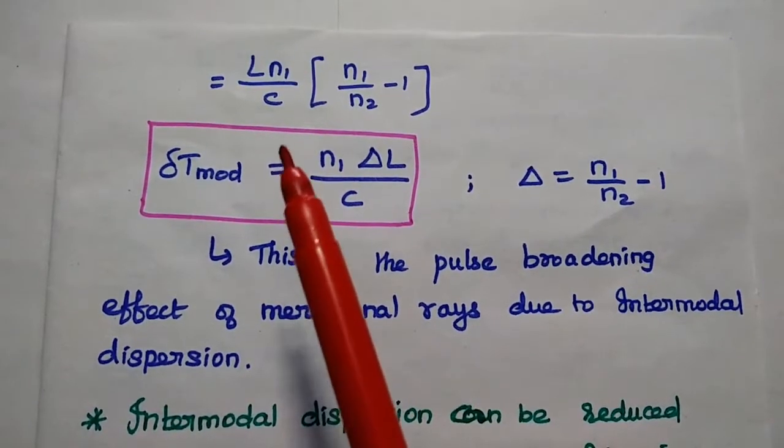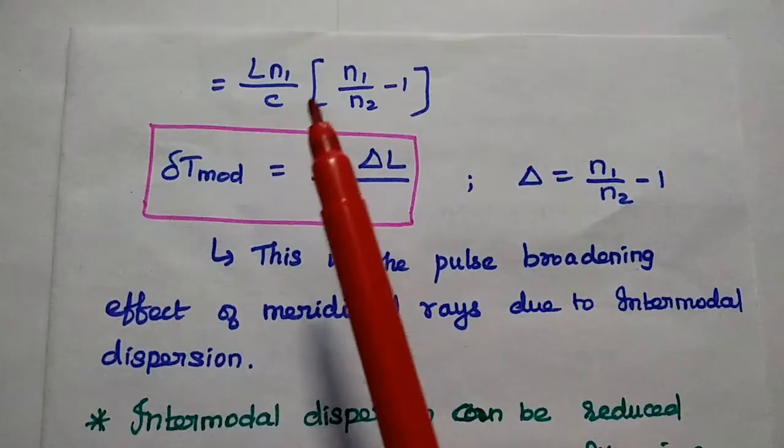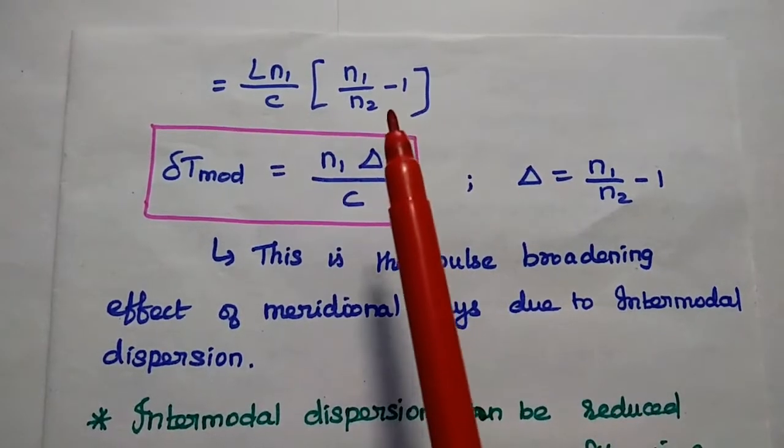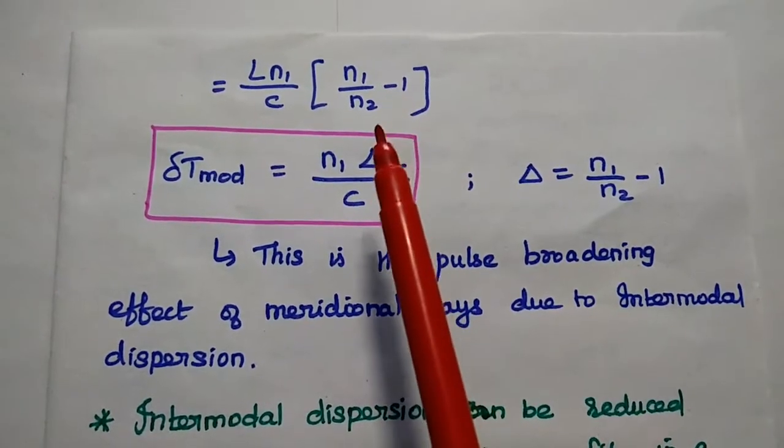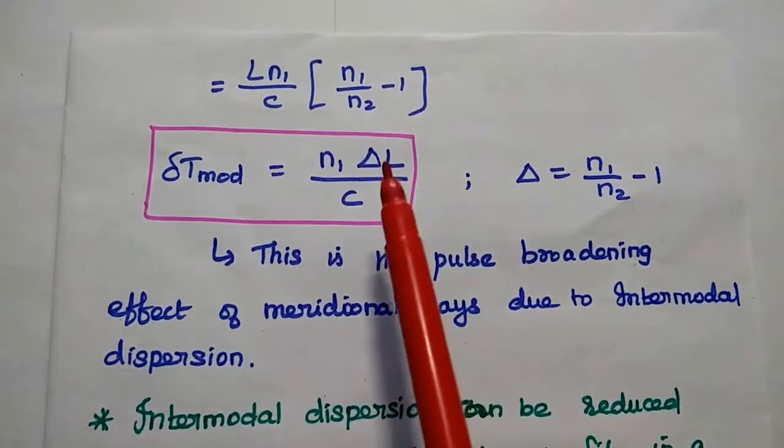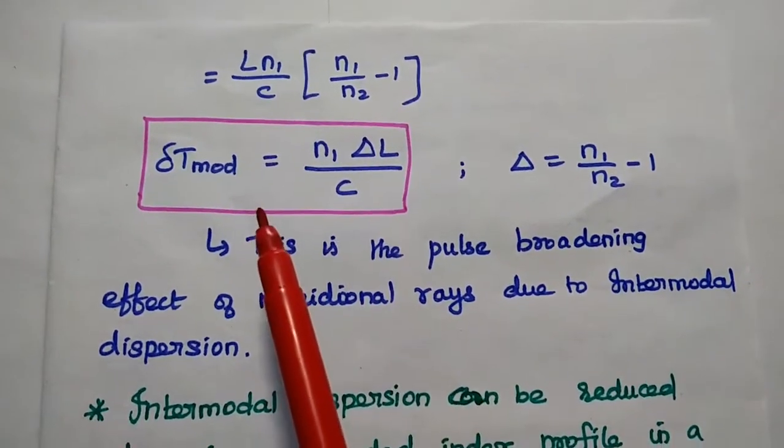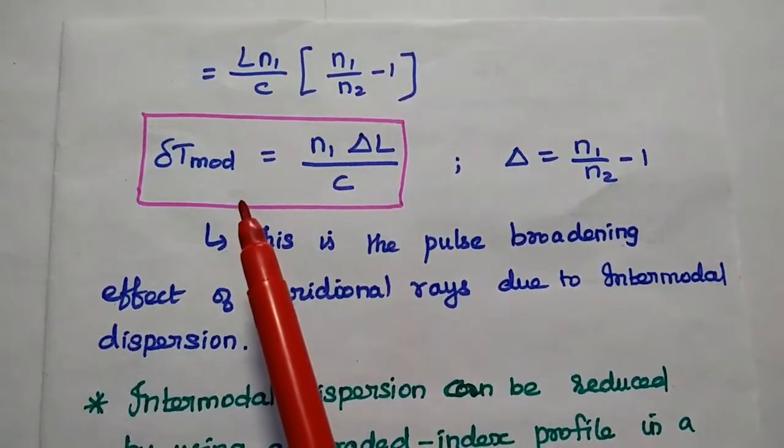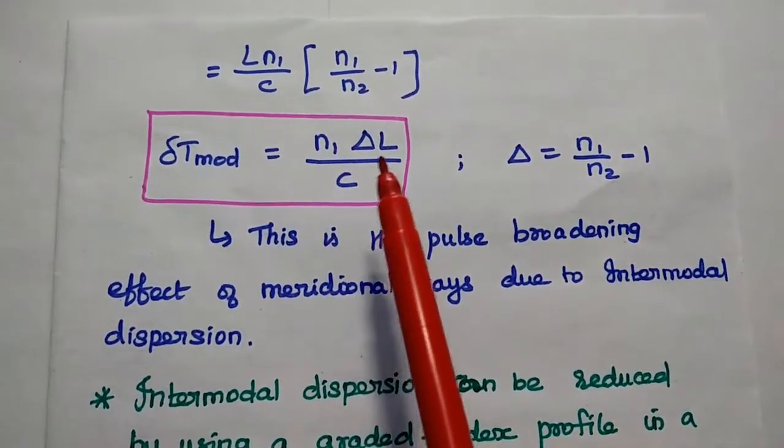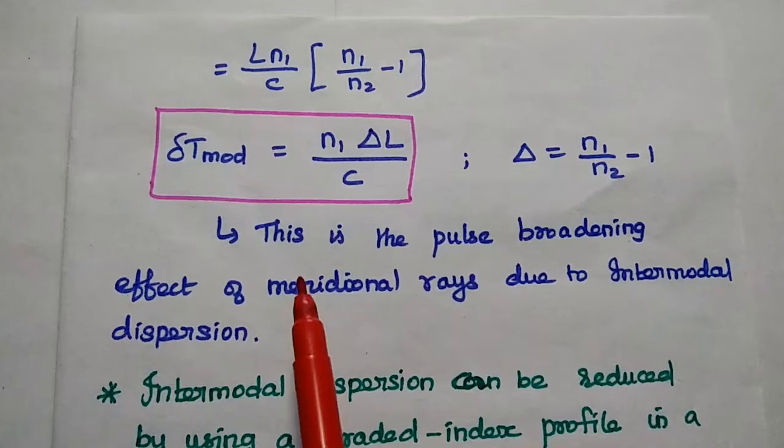Then the intermodal delay difference is L into N1 by C, N1 by N2 minus 1. This N1 by N2 minus 1 can be written as delta. Then we can get the delay difference for intermodal dispersion is equal to N1 delta L by C.